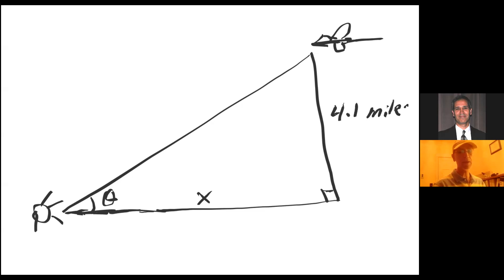We are told that this is 4.1 miles, so we have to be careful with conversion, because d theta dt was given as 1.8 degrees per minute. So we have to convert that.